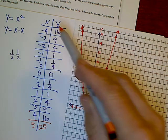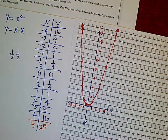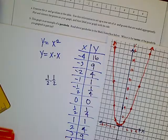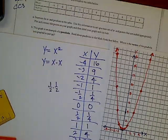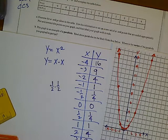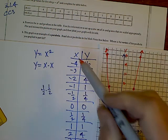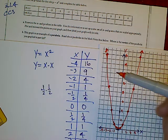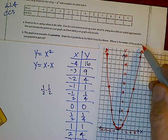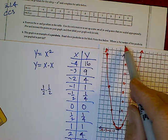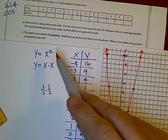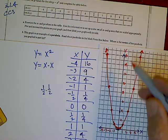If we read part B of this question, it gives us some more information. It says that the graph is an example of a parabola, and it wants us to read about parabolas in the Math Notes. Then it asks about the vertex of the parabola that you graphed.